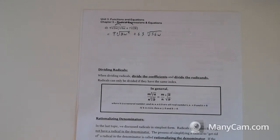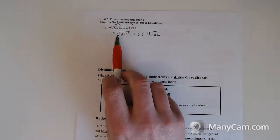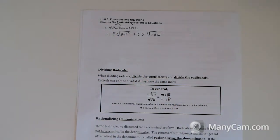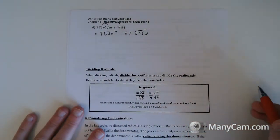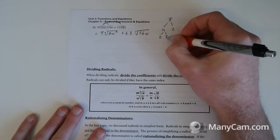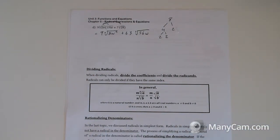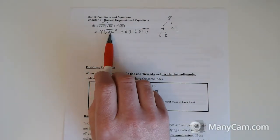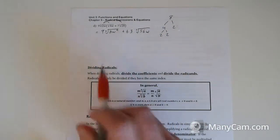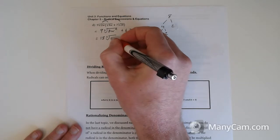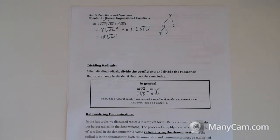9 times 7 is 63, and the third root of 2w times 28 gives 56w. Now we need to simplify further — we're looking for 3 of something to pull out. For the 8: using prime factorization, 8 breaks into 4 times 2, then 2 times 2 times 2 — three 2s. So we pull one 2 to the outside. That gives 18 times the third root of w squared. If there were three w's we could pull one out, but there are only two, so it stays inside.